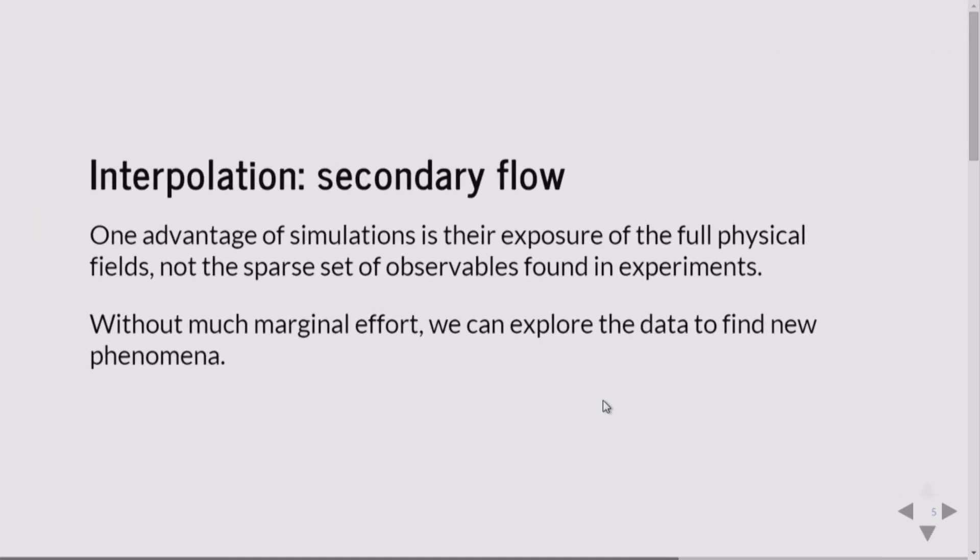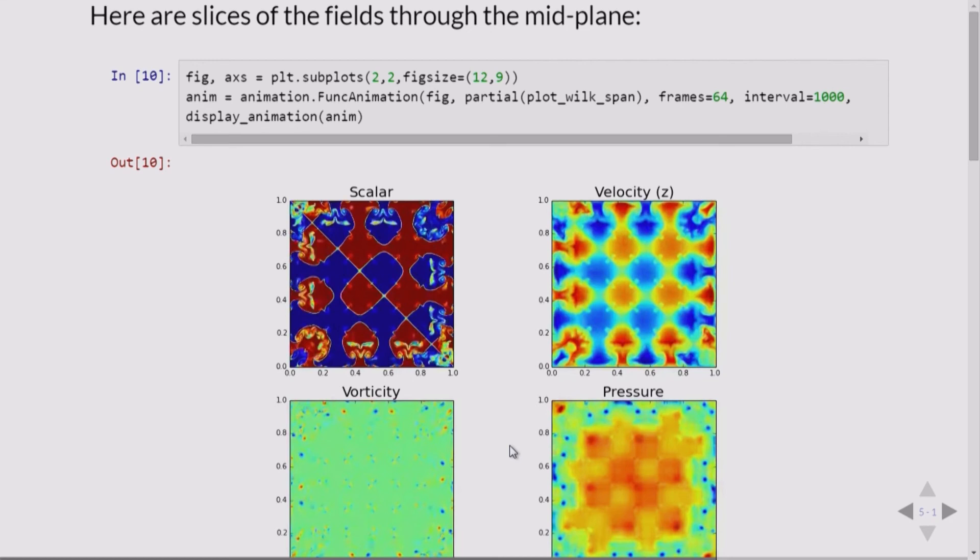So interpolation, one advantage of computation is that you have the full flow field. So without much additional effort, you can just go through and look for other things. The experiment only looked at the flow in vertical slices. We can look at the flow in horizontal slices.